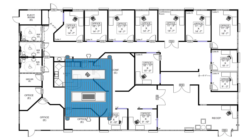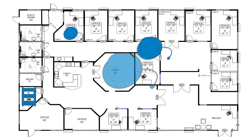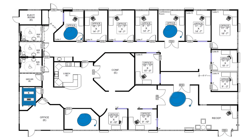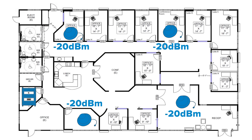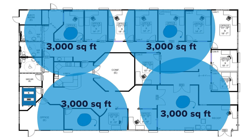DBM is also useful for estimating the indoor coverage area we might expect from an amplifier system. For example, an indoor antenna that is radiating -20 DBM can effectively cover about 3,000 square feet.